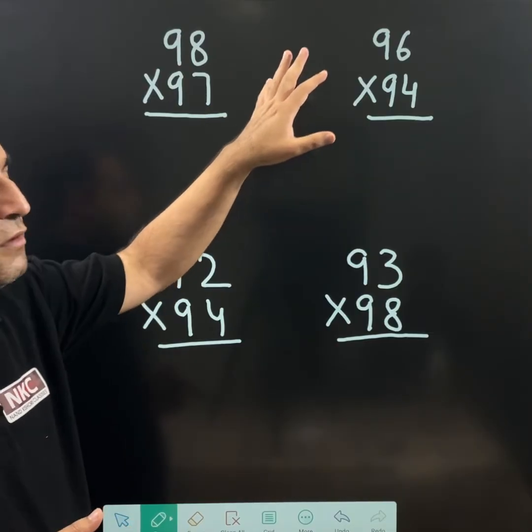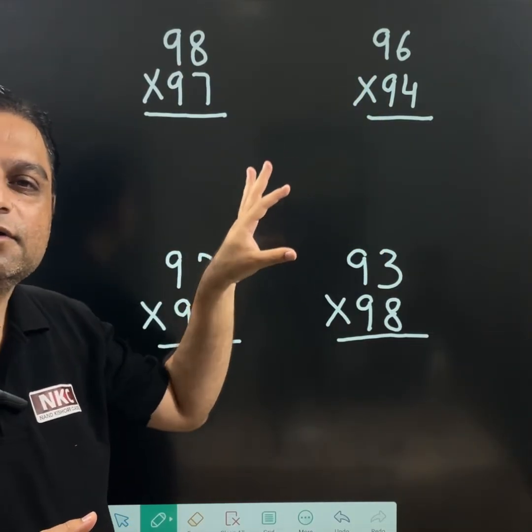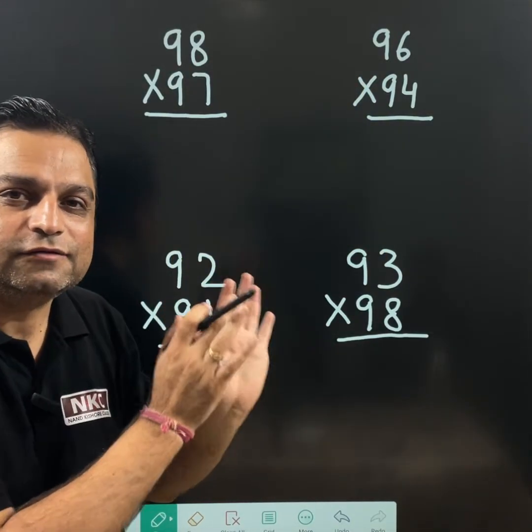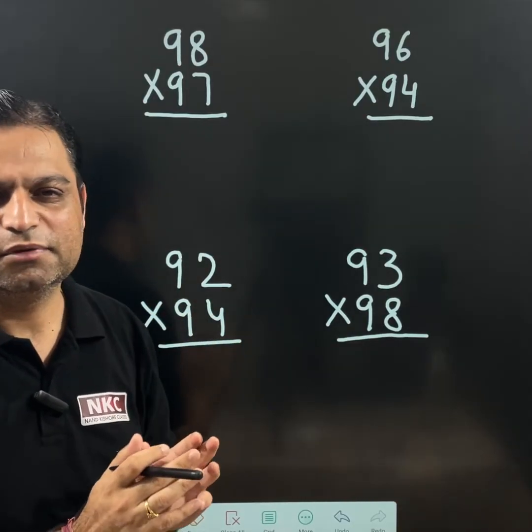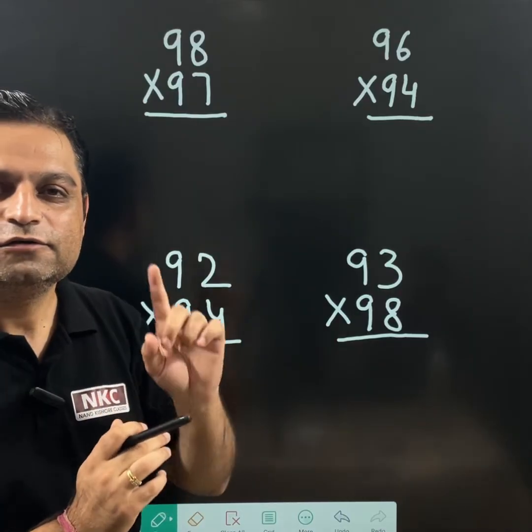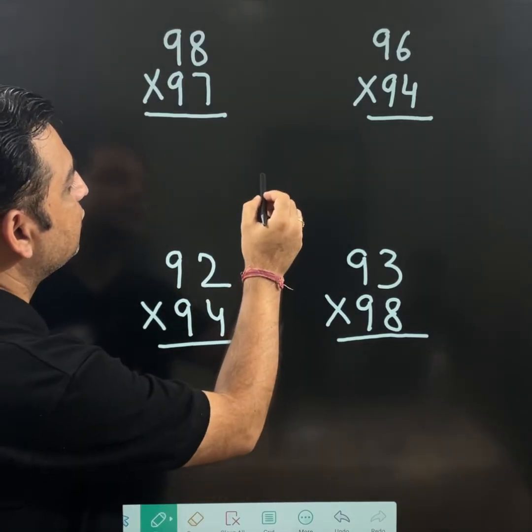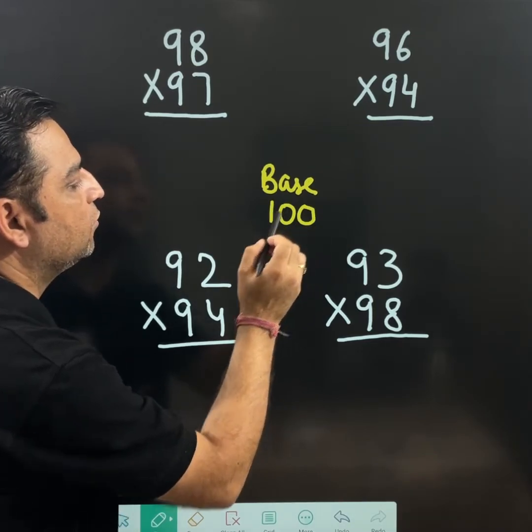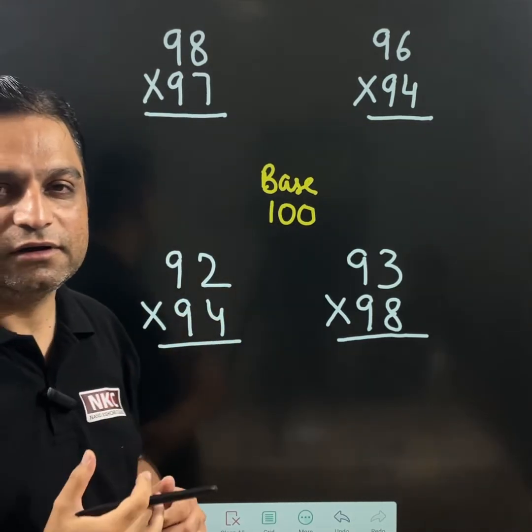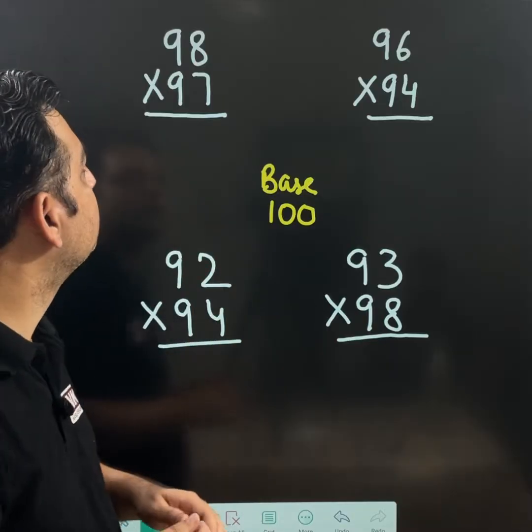98 times 97, 96 times 94, all are in the form of 90s, right? And their base I am going to take 100 because they are closer to 100. Do remember I am taking here base as 100. Now what is the meaning of base 100 here? Try to understand properly.